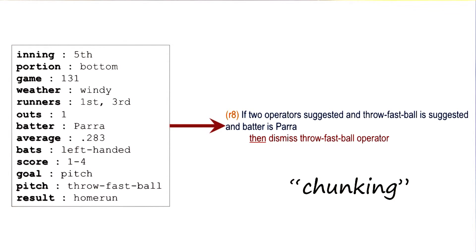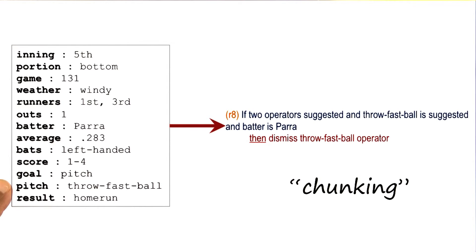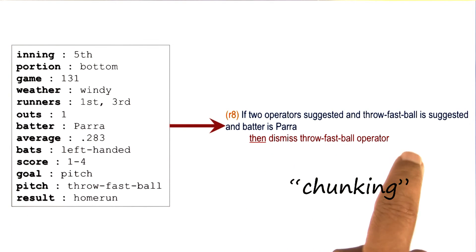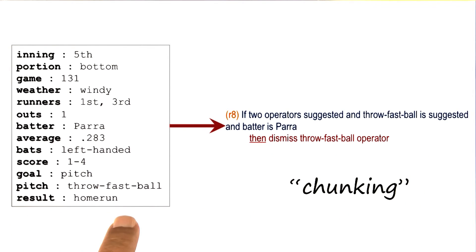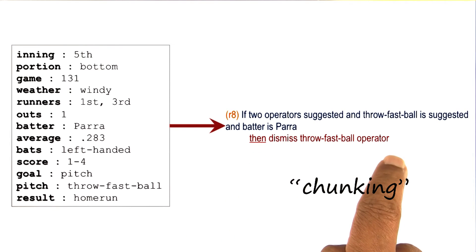In particular, Soar looks at the percepts of the current situation and compares them with the percepts of similar situations in the episodic memory. It finds any information available about the current batter. If information is available that tells Soar the result of some previous action that also occurs in the current impasse, then Soar picks that event and tries to encapsulate the result of the previous event in the form of a rule. In this case, it wants to avoid the result of a home run, and therefore it says to dismiss that particular operator.